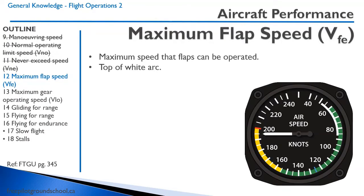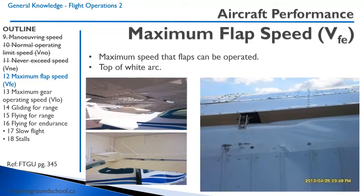The maximum flap speed, VFE, is the maximum speed at which flaps can be operated without structural damage. It is always the top of the white arc — in this case about 86 knots. You must be below 86 knots to extend flaps. The pictures here show the visible damage that occurs when flaps are extended above this speed: wrinkles and buckling are readily visible underneath the wing and from the rear, because the flap wants to be pushed up but is constrained by the mechanism.